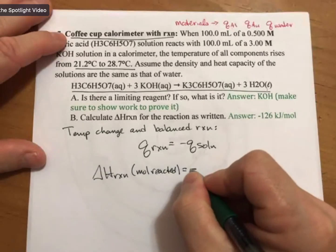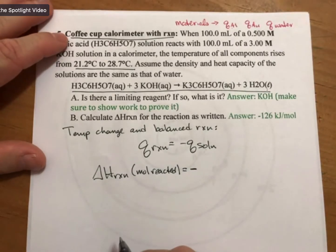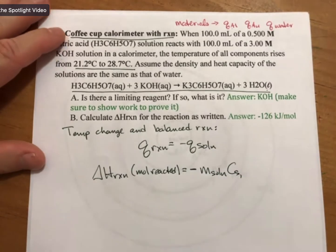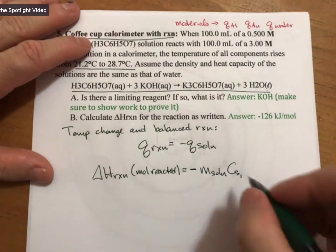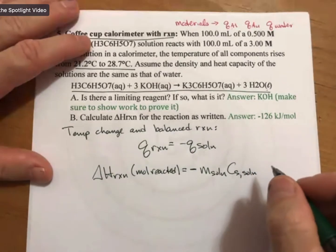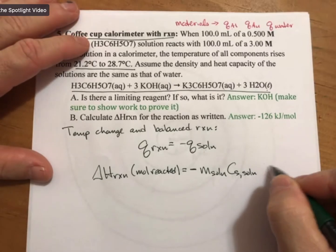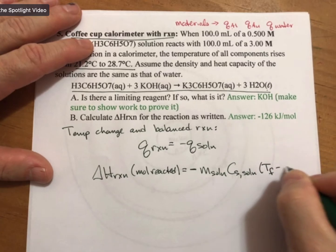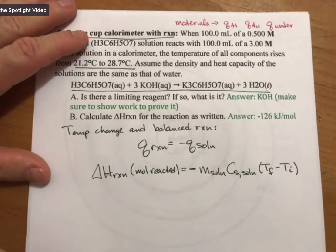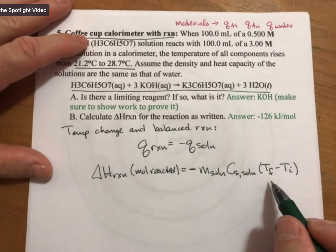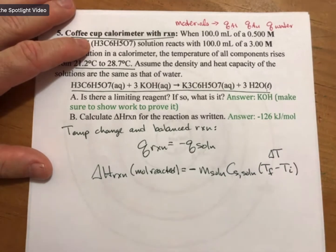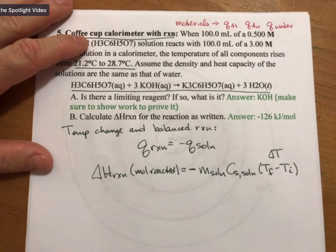Q solution, so write your minus sign, and Q solution will be mass of solution times specific heat capacity of the solution times delta T. But I'm going to substitute for delta T, T final minus T initial. And so on your conversion and equation sheet, it does say delta T, but since we have numbers for it, we're going to plug them in.